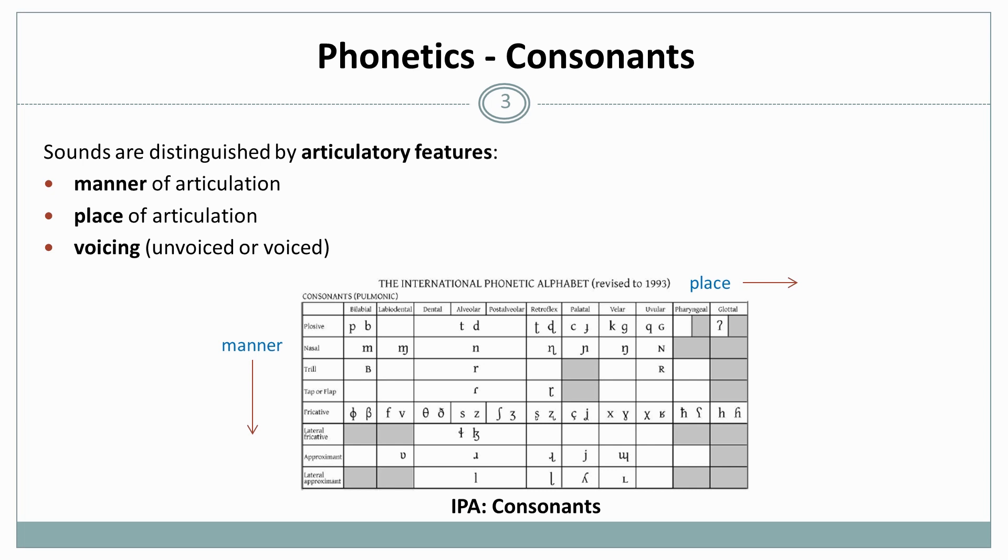In the columns here we have the place of articulation and in the rows we have manner. So manner includes things like plosives, nasals that involve the nose somehow, then we have fricatives and so on. In place we literally have the place in your mouth where the sound is produced. For example, dentals involve the teeth somehow. You can see that there are sometimes two sounds in one cell and then these differ by voicing. So for example, p is unvoiced and the b is the voiced bilabial plosive.